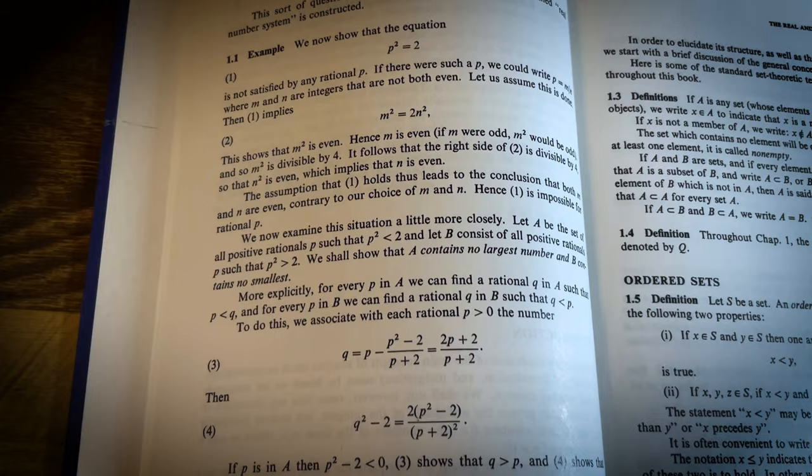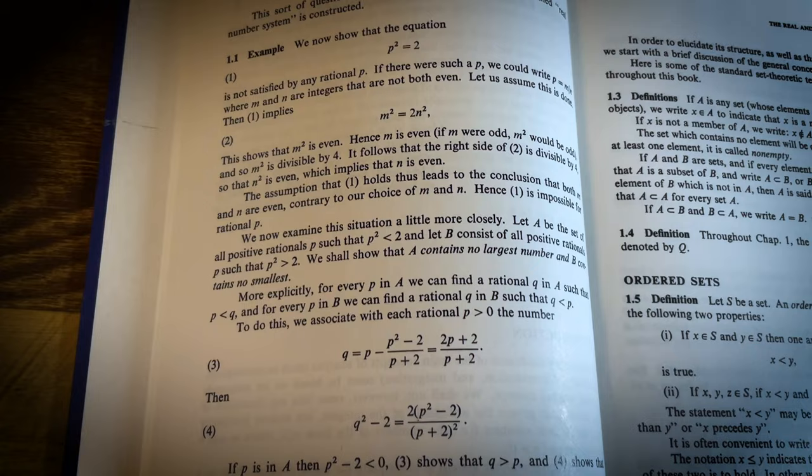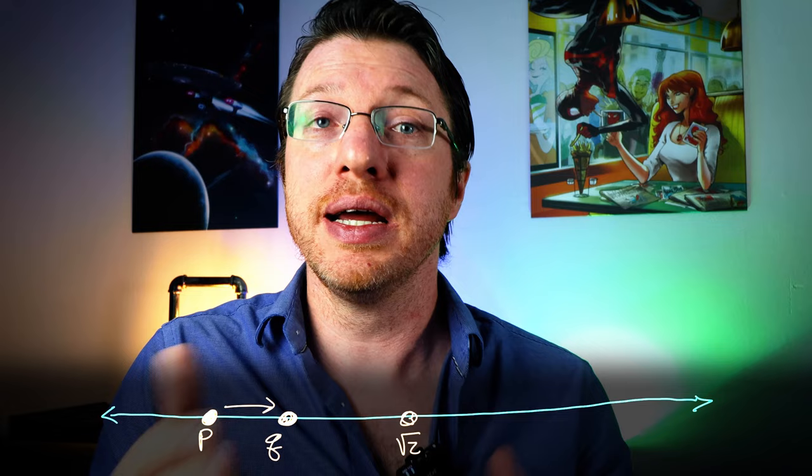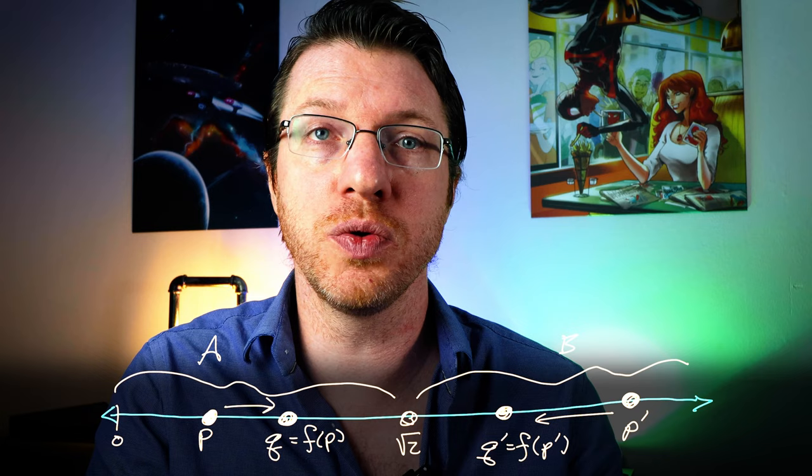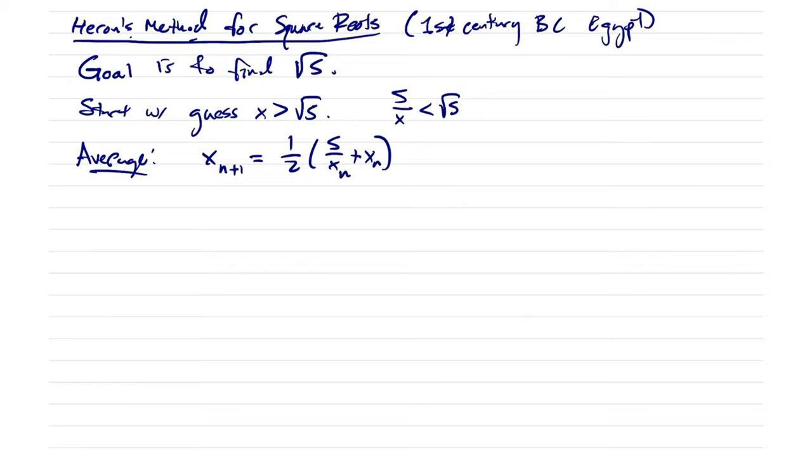Rudin wants to drive the point home by showing that for any positive rational number less than the square root of 2, we can find another positive rational number less than the square root of 2 again, but closer. And the same happens for any rational number bigger than the square root of 2. This is a very particular kind of problem. If we wanted a sequence that converged to the square root of 2, we could just invoke Heron's method or equivalently use Newton's method on x squared minus 2. I've done each of these in older videos on numerical analysis.